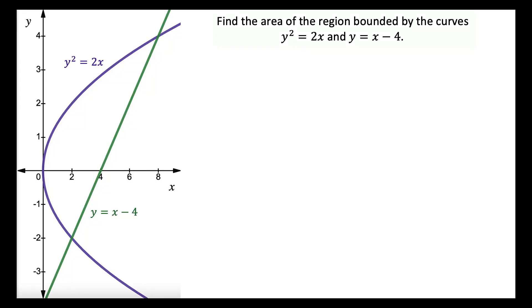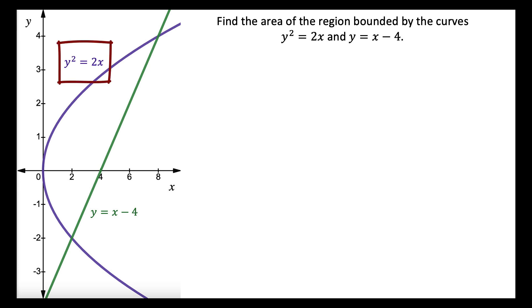In this problem, we need to find the area of the region bounded by the curves y squared equals 2x and y equals x minus 4. So we begin with a sketch of the bounded region. The graph of y squared equals 2x is the parabola that opens to the right and is symmetrical about the positive x-axis with its vertex at the origin, and the graph of y equals x minus 4 is the increasing line.